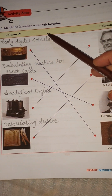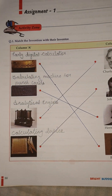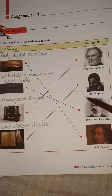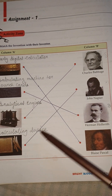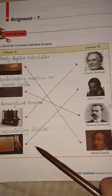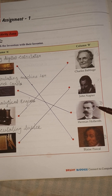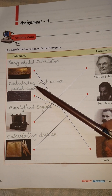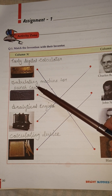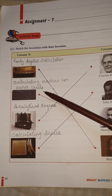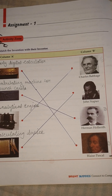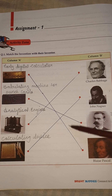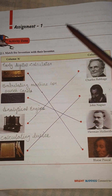Match the invention with their inventors: Charles Babbage invented the analytical engine, John Napier invented the calculating device, Herman Hollerith invented the tabulating machine for punch cards, and Blaise Pascal invented the early digital calculator.